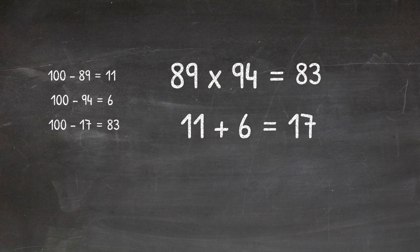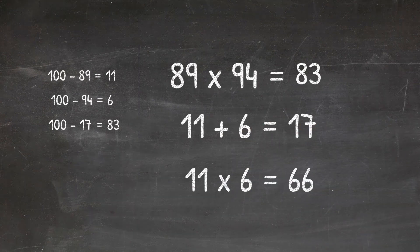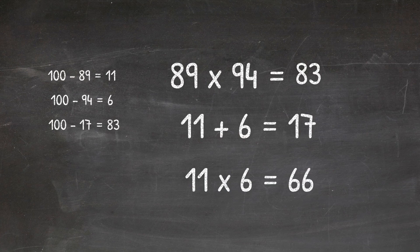Now to get the remaining two digits of our answer, we take our 11 and 6 again. This time we multiply them together to give us a value of 66, and 66 is our final two digits of our answer. So 89 times 94 equals 8,366.